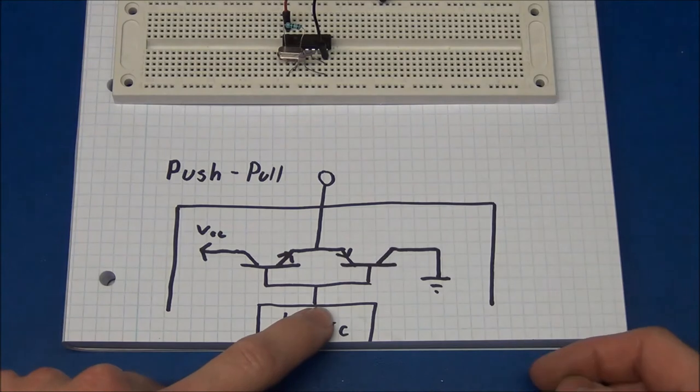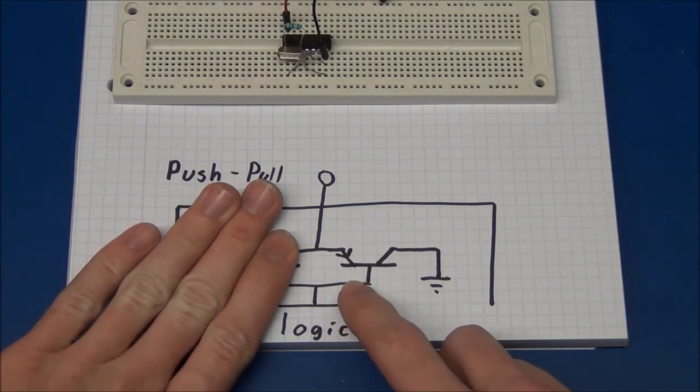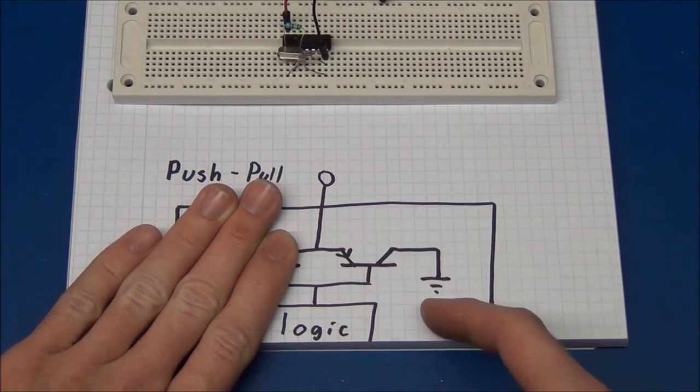On the other hand, if this is low, then this transistor will be turned off, and this PNP transistor will be turned on, and it can sink current from the output to ground.